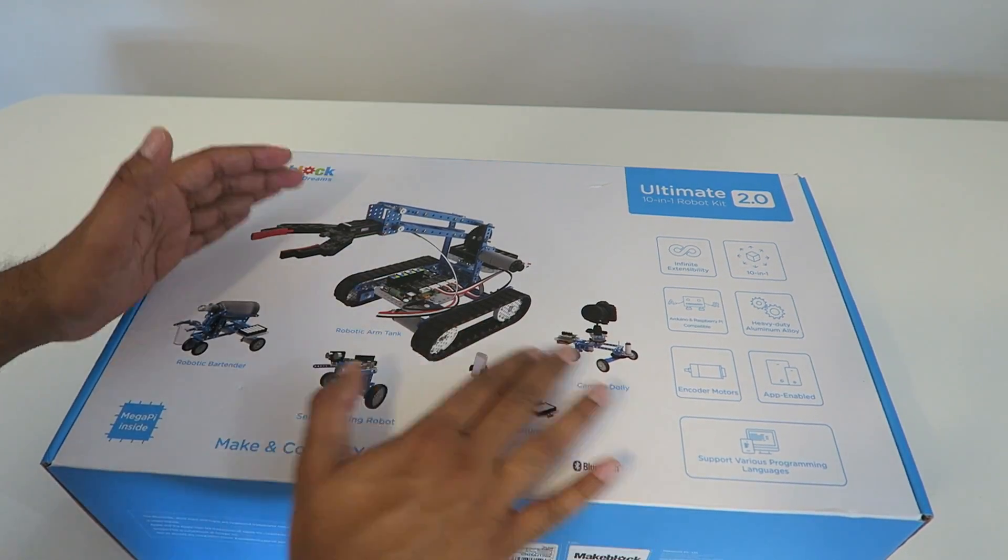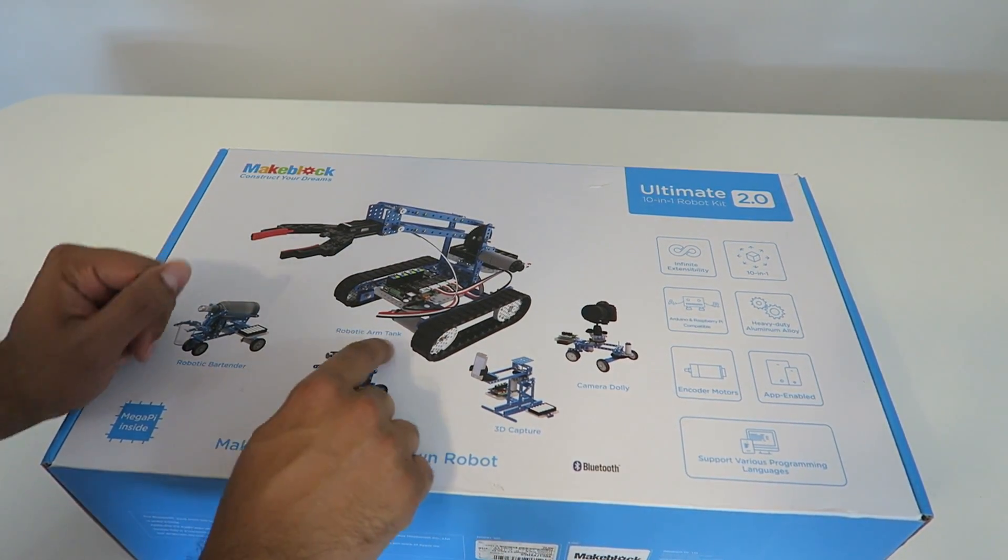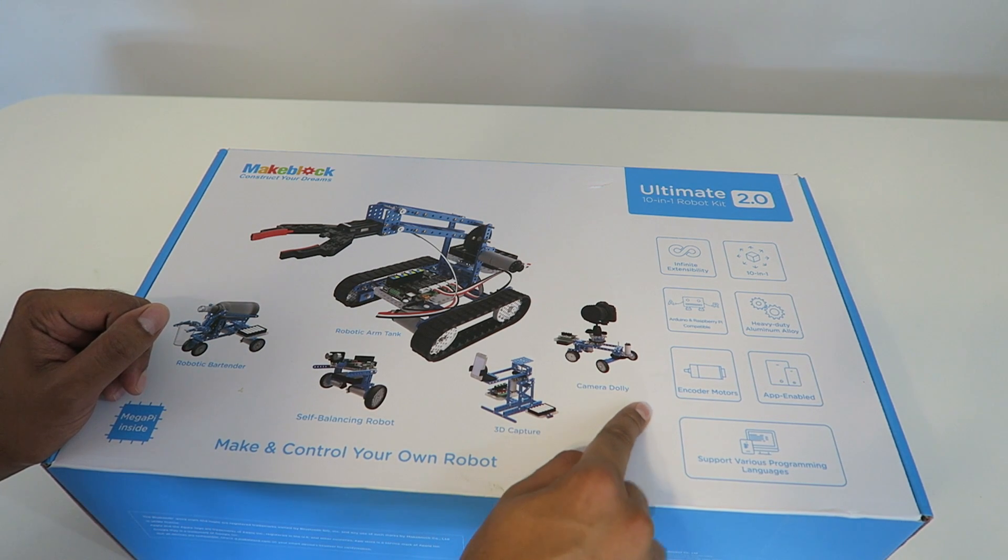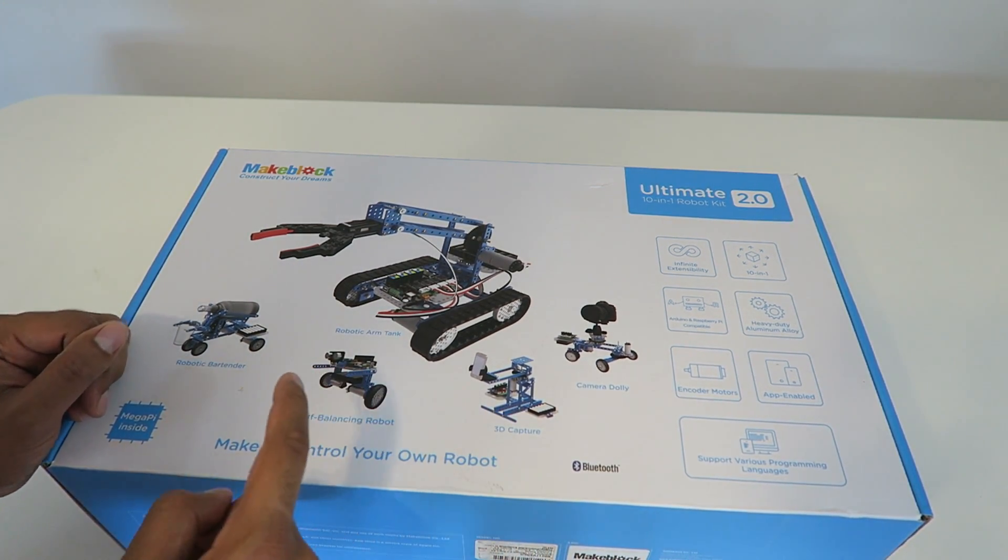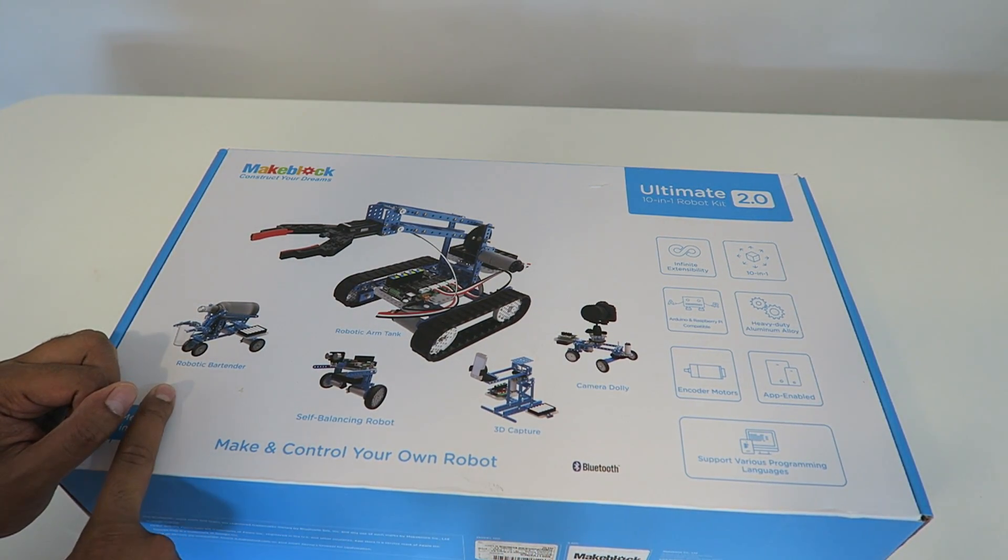Now here it actually shows a different kind of robots you can build. What we'll be building is actually the robotic arm tank today. You can also build a camera dolly, 3D capturer, self-balancing robot, as well as a robotic bartender.